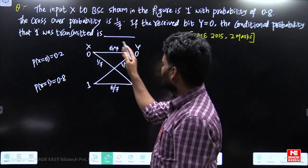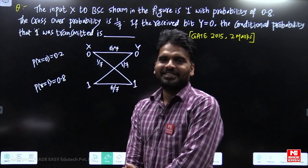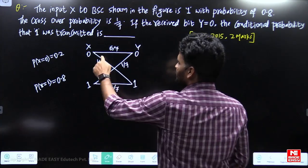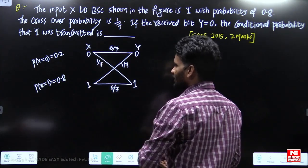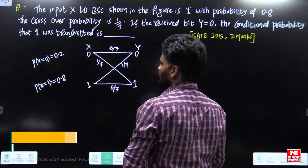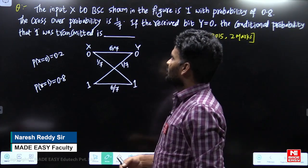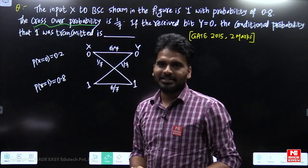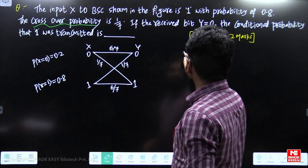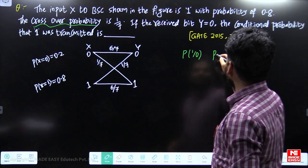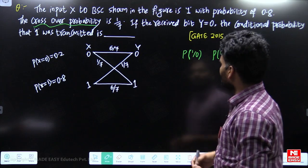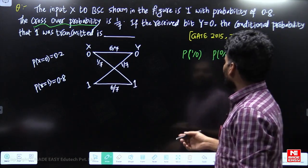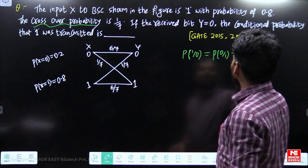In a Binary Symmetric Channel, the input will be zero and one, and the output is also zero and one. The probability of x equals one is 0.8, so the probability of x equals zero is 0.2. The crossover probability is 1/7. For a binary symmetric channel, p(1|0) equals p(0|1), and that is given as 1/7.